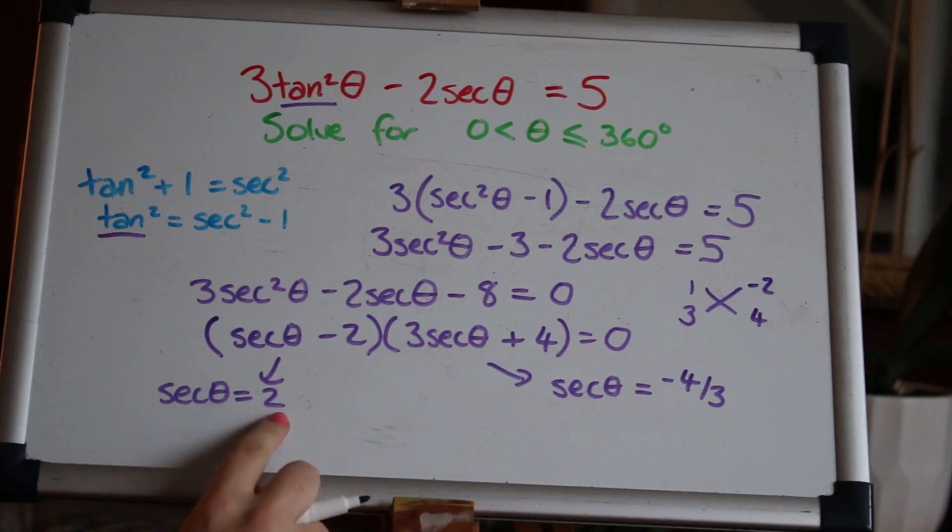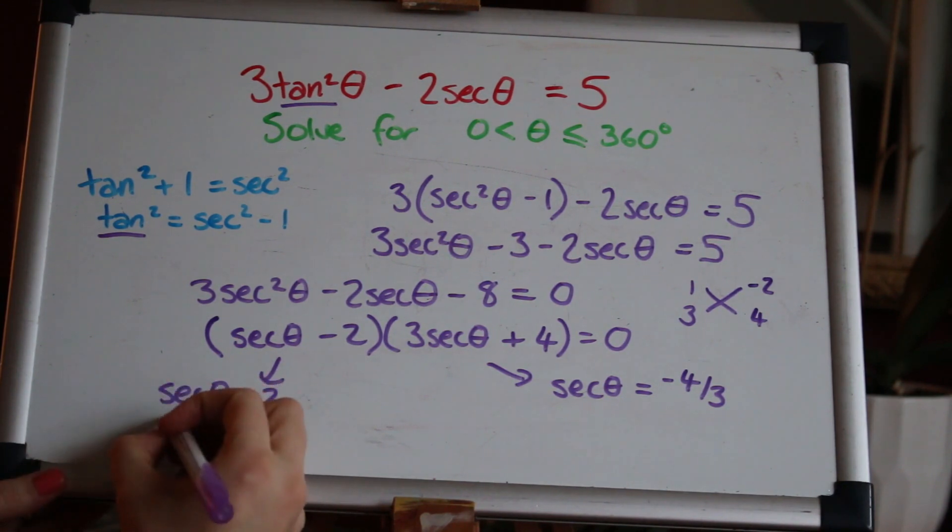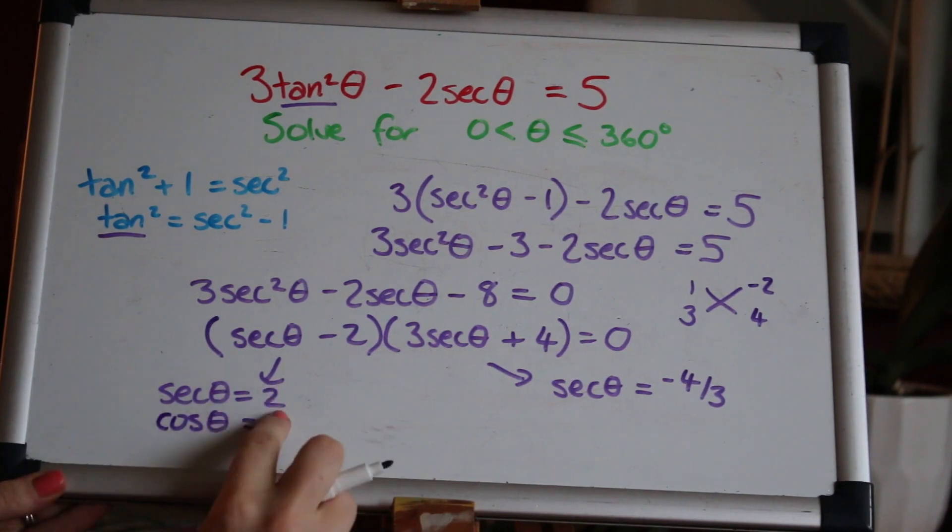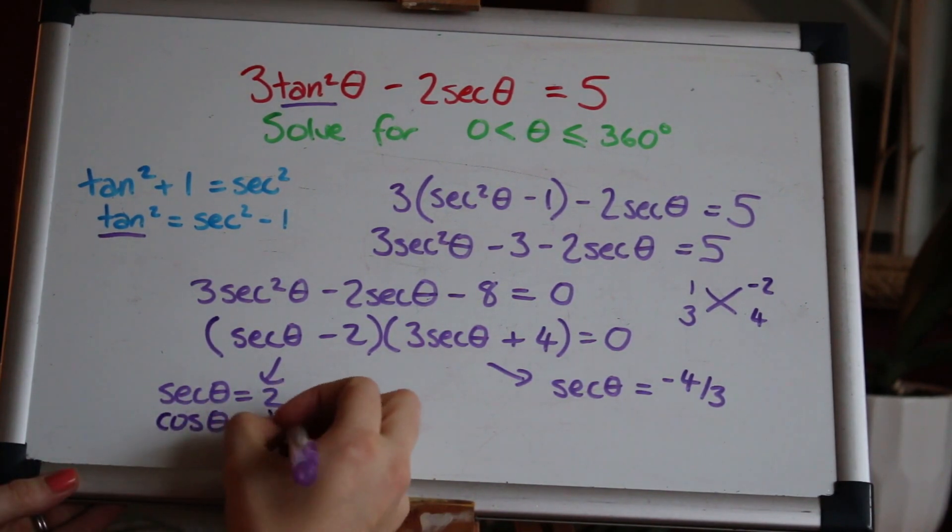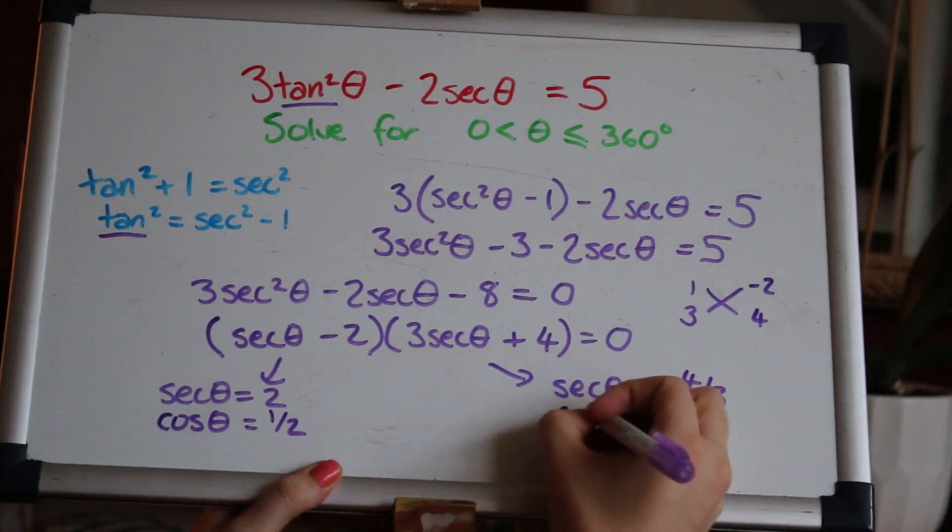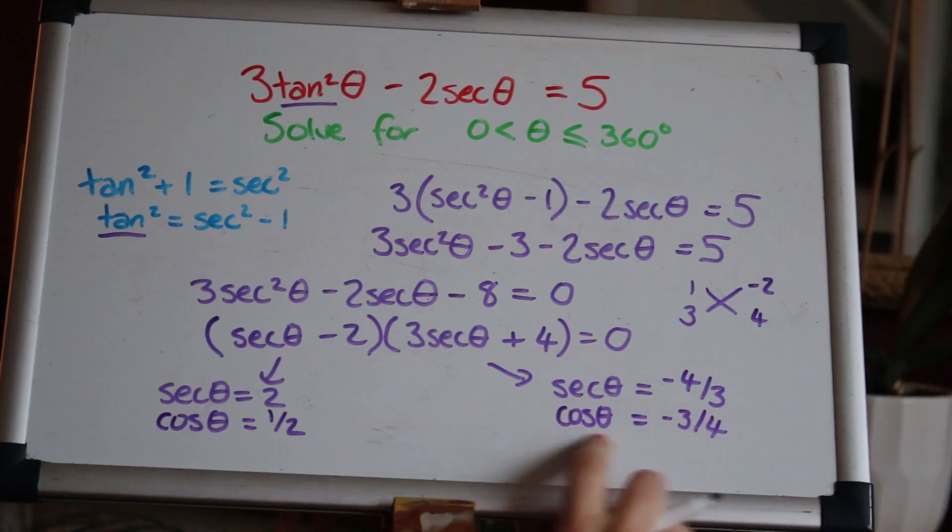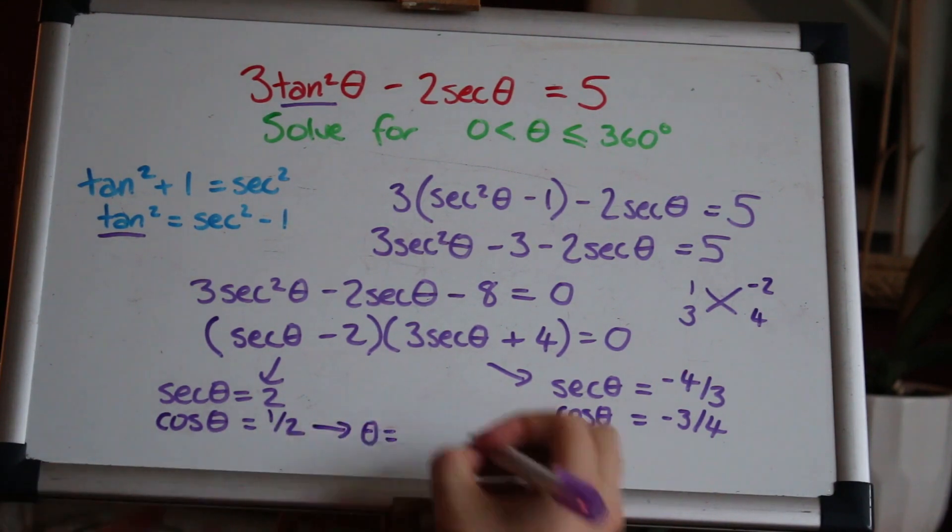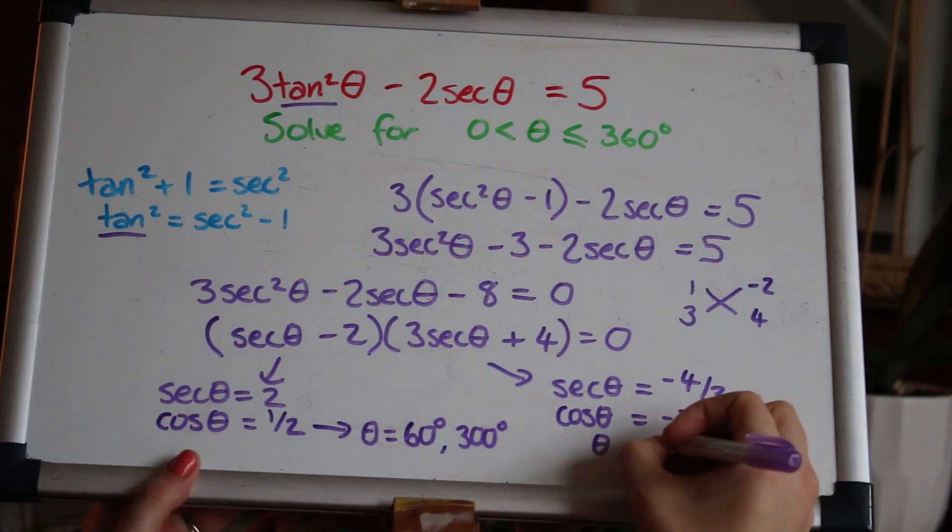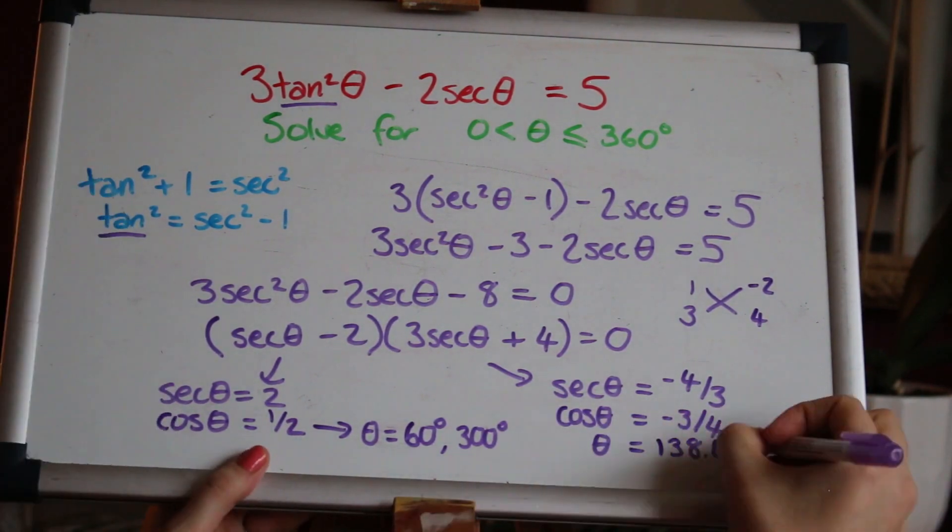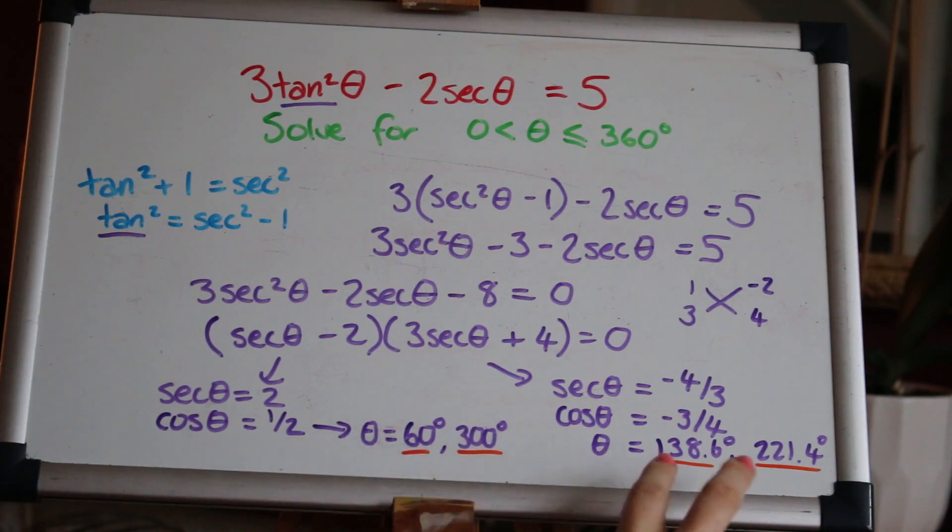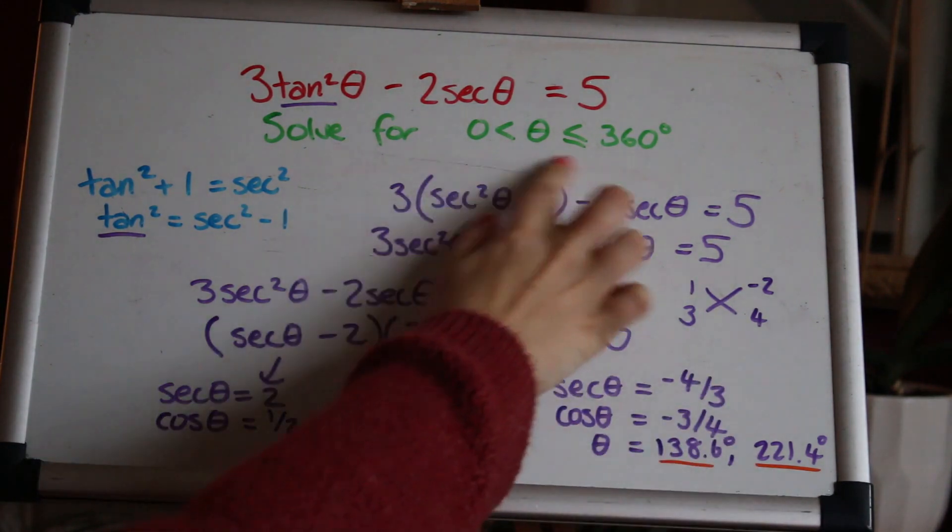Now when we solve these separately what we can do is remember that sec is one over cos. We can flip the whole equation upside down again so that we've got cos and that will be flipped. The reciprocal of two is a half: cosθ = 1/2. So again I've made the reciprocal of that one to flip it and get minus three over four: cosθ = -3/4, and now we can solve those as basic trig equations. So I've got two solutions from each of those giving four solutions in total: θ = 60°, 300°, 138.6°, 221.4° in the range that we've been given.